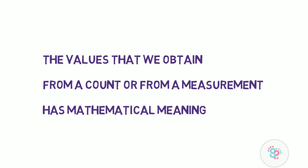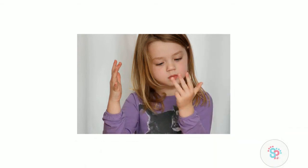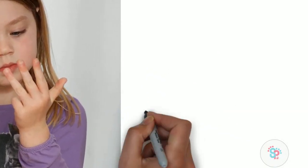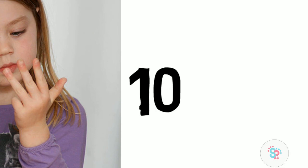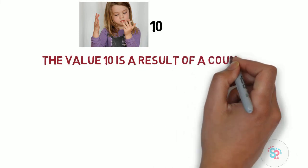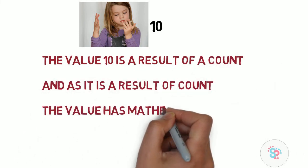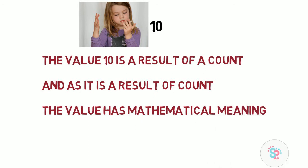Let's dig a bit deeper into this. Imagine someone is asking a kid how many fingers do you have in your hand. After counting her fingers, the kid would say 10. The value 10 is a result of count, and as it is a result of count, the value has mathematical meaning.